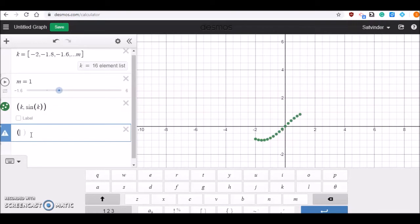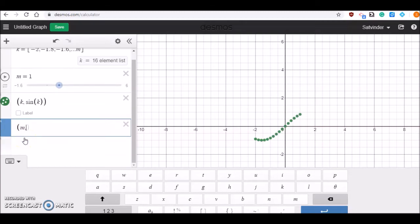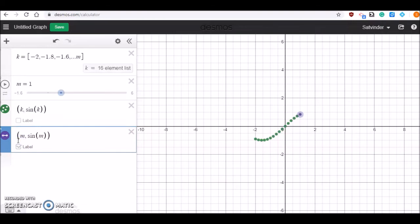K sine K is for the graph, but for the leading point, the tailing point, M sine M because M will change and the point will move. You can make it label also so that you can see the values. So let me see, it's labeled now.